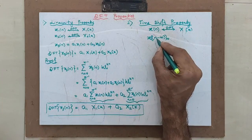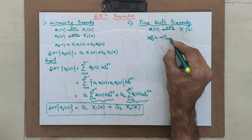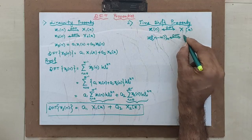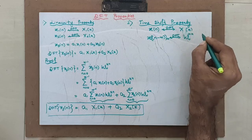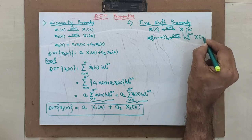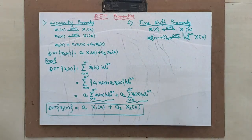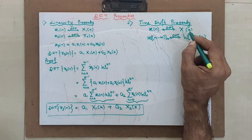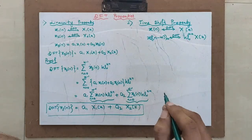If you have a circularly shifted signal x(n-m), the corresponding DFT is given by W_N raised to mk, multiplied by x(k), where x(k) is the DFT of the original signal. I have to prove this. The proof can be taken using the IDFT formula.